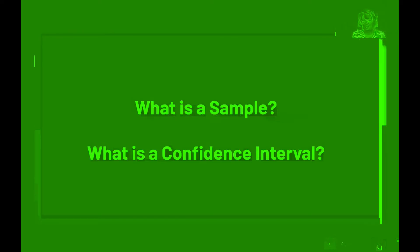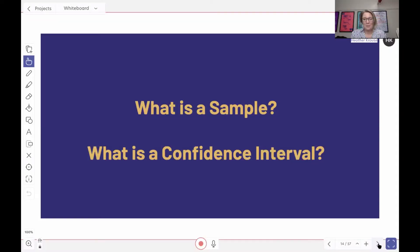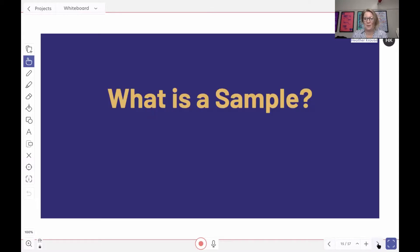In order to talk about what bootstrapping is, we need to talk about two things that go into making up bootstrapping and why anyone would use it. We need to talk about a sample and a confidence interval, because what bootstrapping basically does is take your sample and build you a nice confidence interval. If you don't understand what that means yet, don't worry, because we're going to talk about what is a sample and what is a confidence interval.